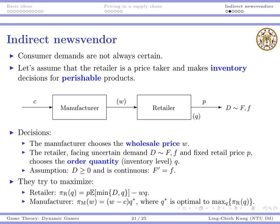We want to ask: in equilibrium, what will the manufacturer do — what's the wholesale price? What will the retailer do — what's the quantity? And are these outcomes efficient or inefficient, and what implications can we get from this model?